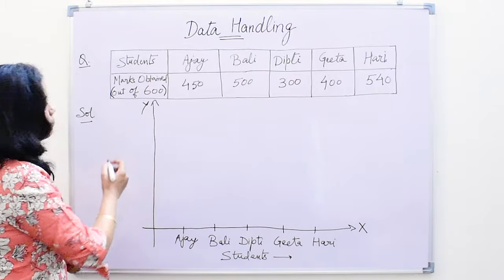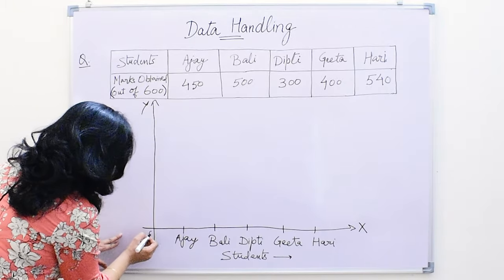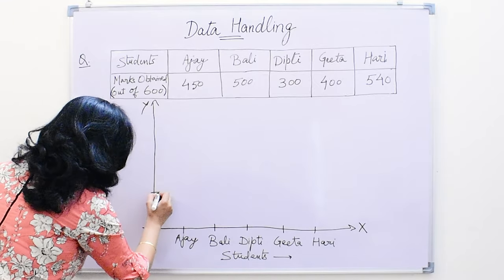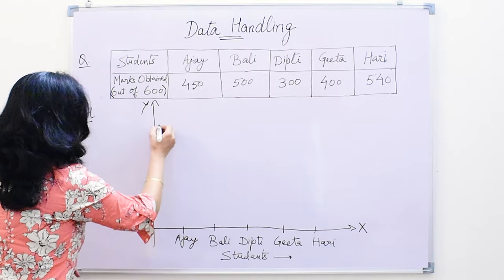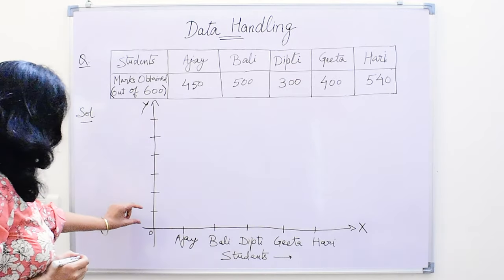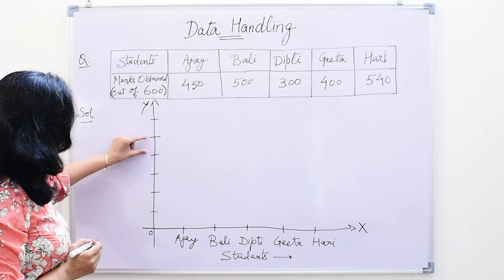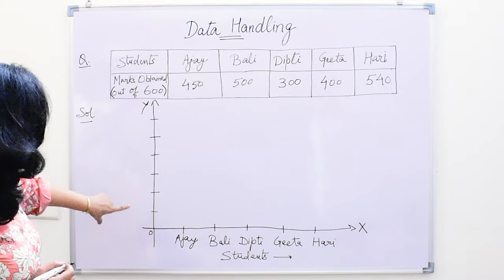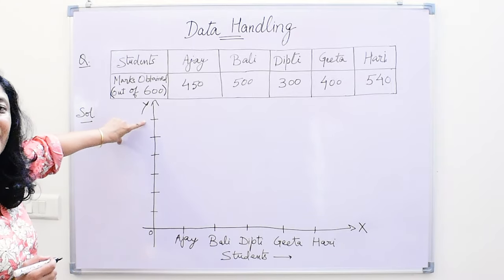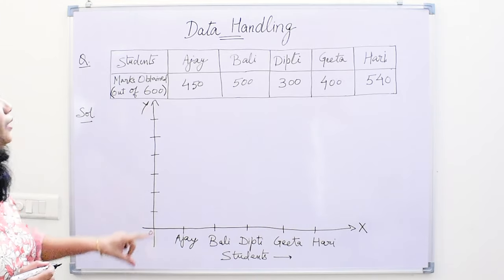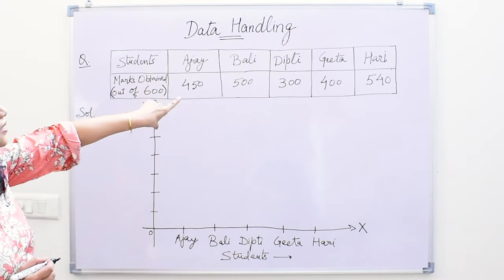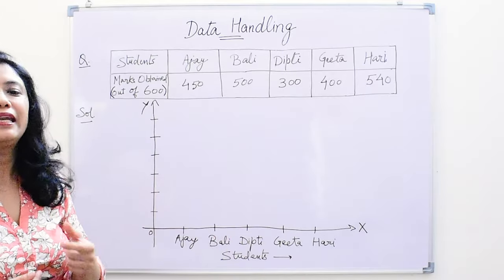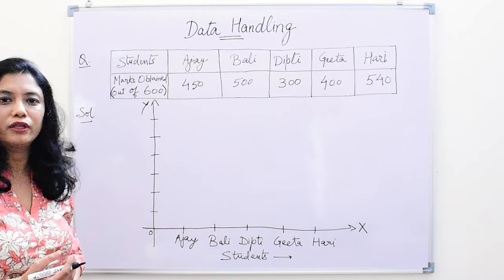Now we will mark the markings on the y-axis. Here this is the zero point. We have to make equal divisions, and the distance between each division should be the same. We are starting with zero. Now see the end point — the end marking of this scale has to be a number which is bigger than the maximum marks obtained by the student. The maximum marks here is 540, so we can take a number close to 540. It can be 600.